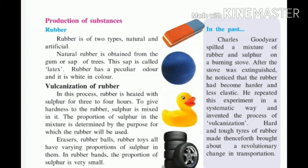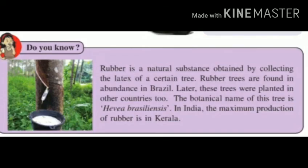Vulcanization is done to give hardness, toughness, and strength to the rubber. The proportion of sulfur in the mixture is determined by the purpose for which the rubber will be used.